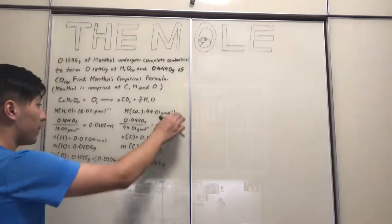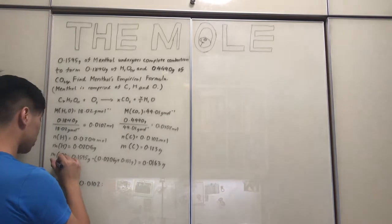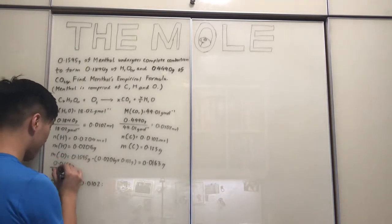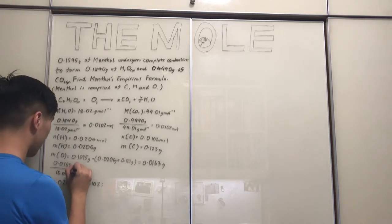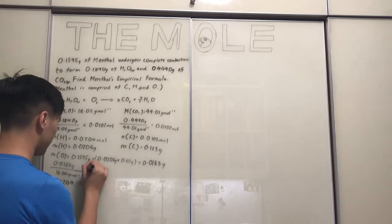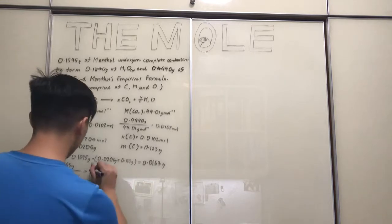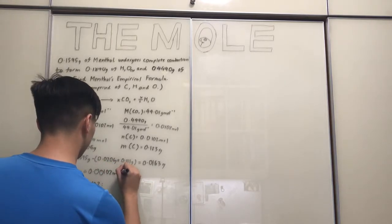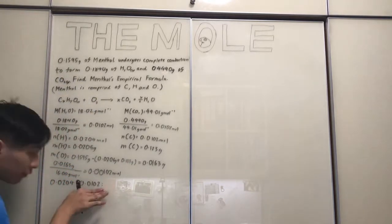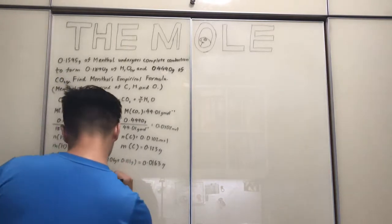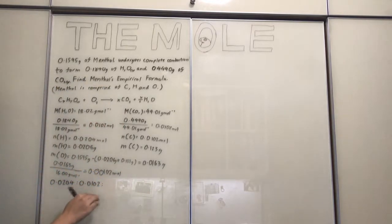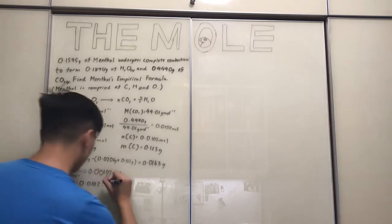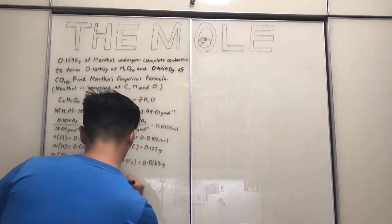Using the same moles relationship, the mass of oxygen (0.0163 grams) divided by its molar mass (16.00 grams per mole) gives us 0.00102 moles of oxygen, correct to three significant figures. So filling in the final value of our ratio — hydrogen to carbon to oxygen — we have 0.0204 to 0.0102 to 0.00102.